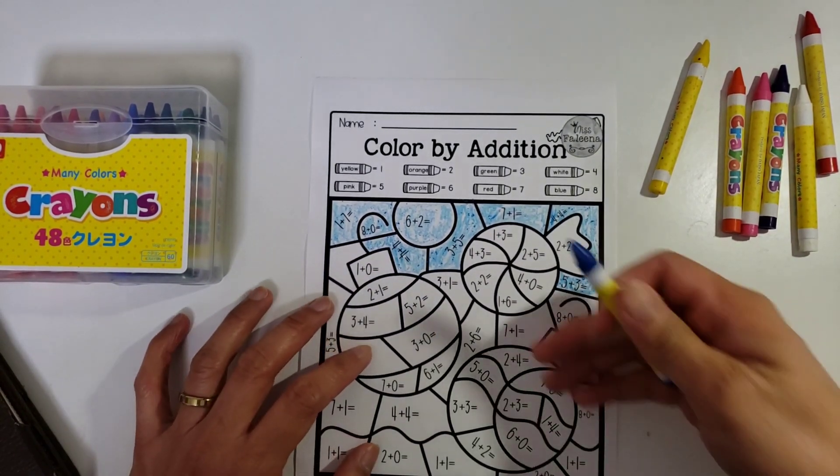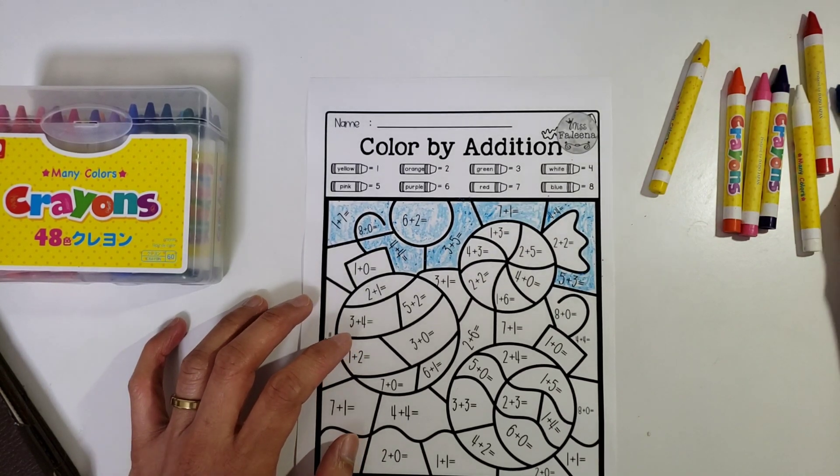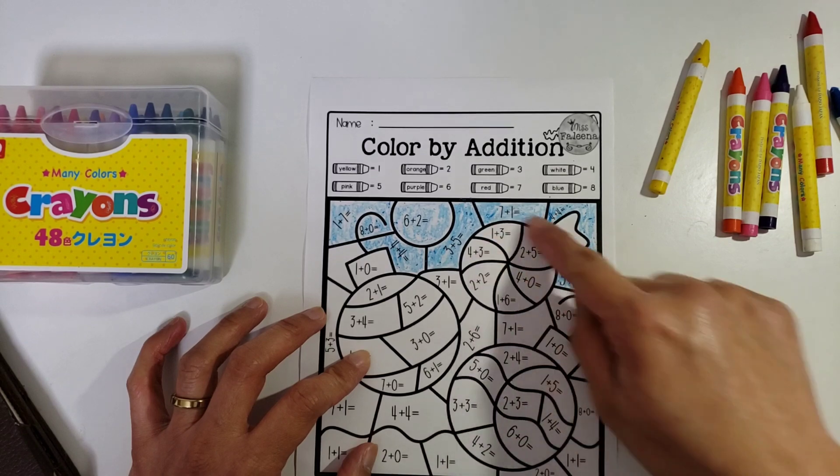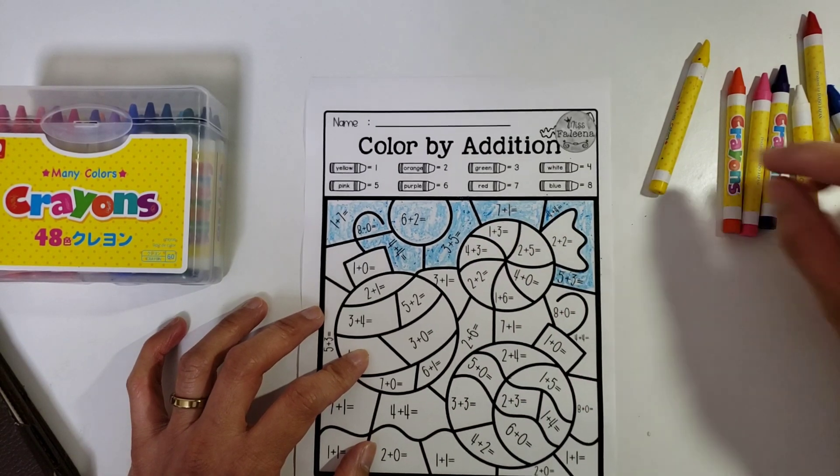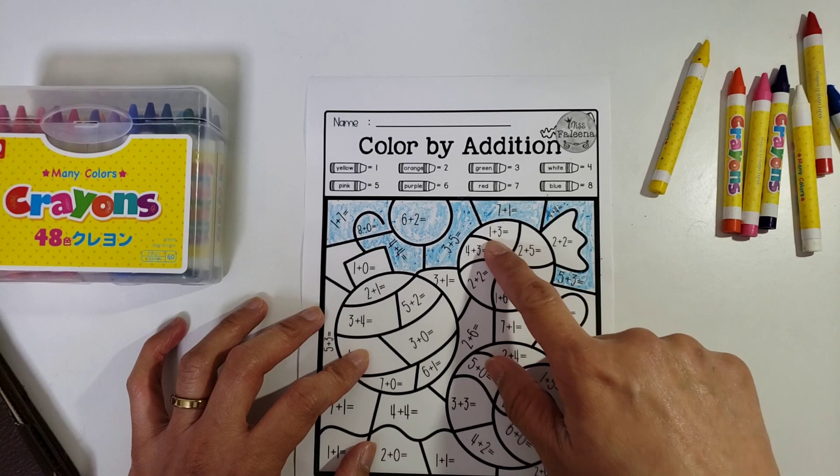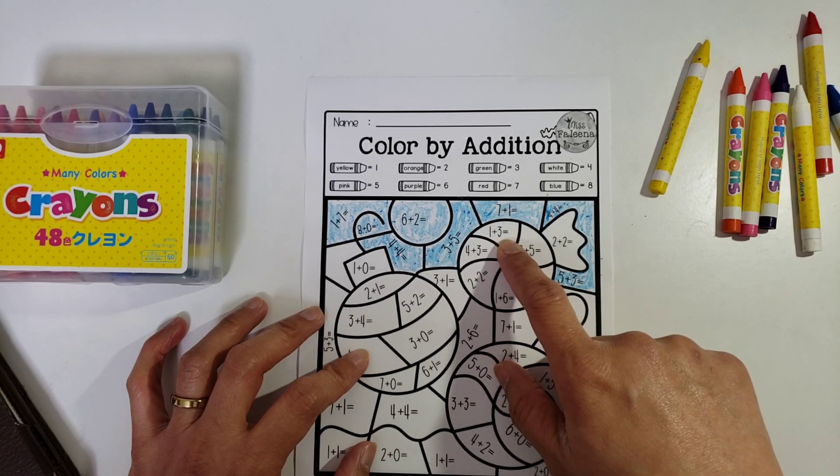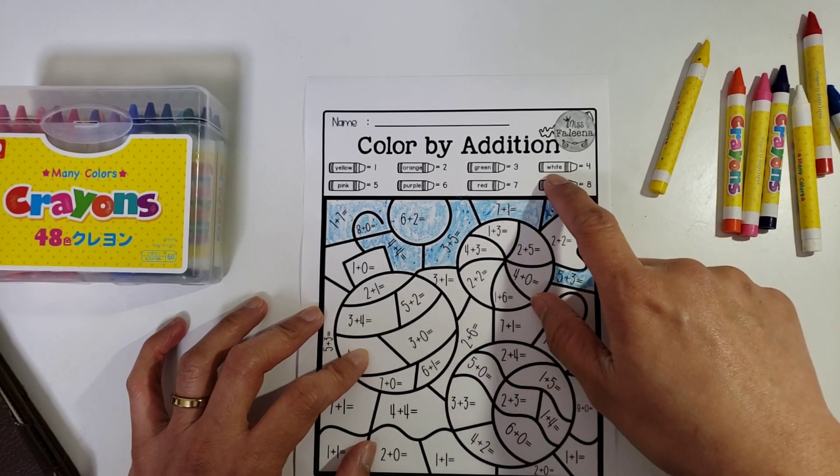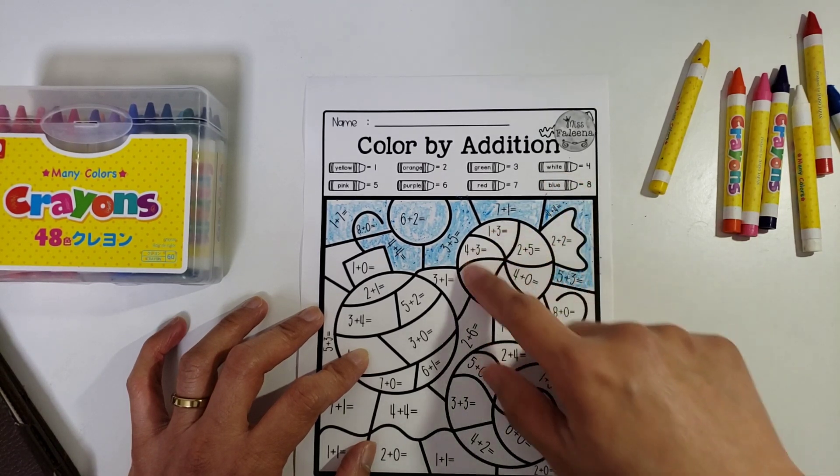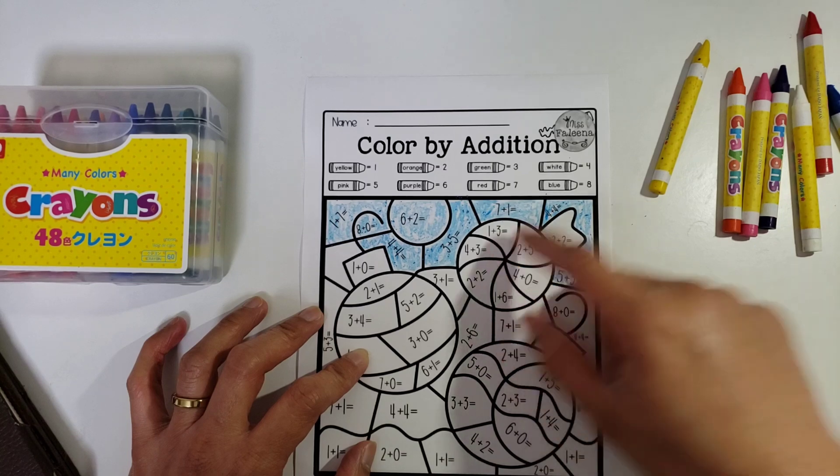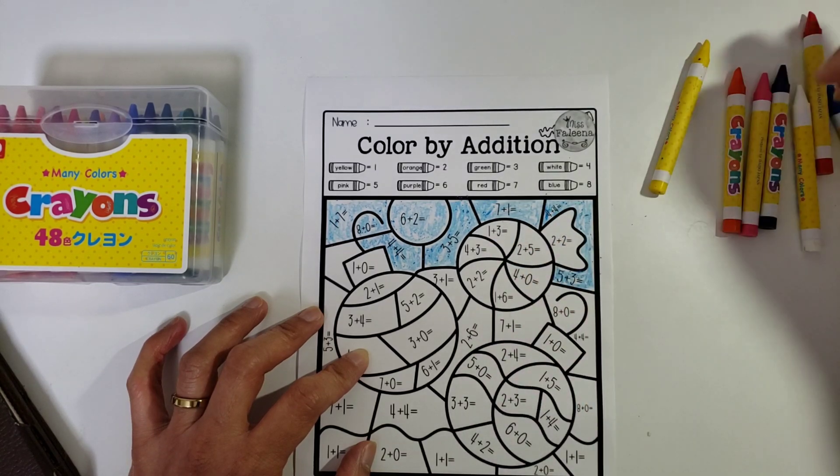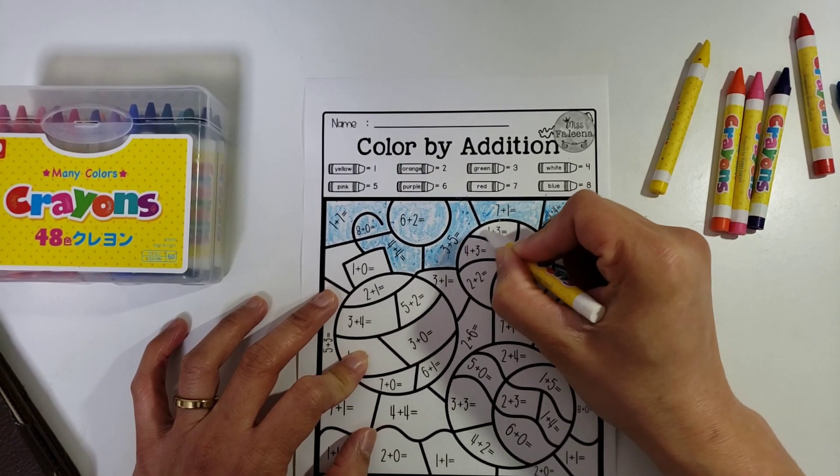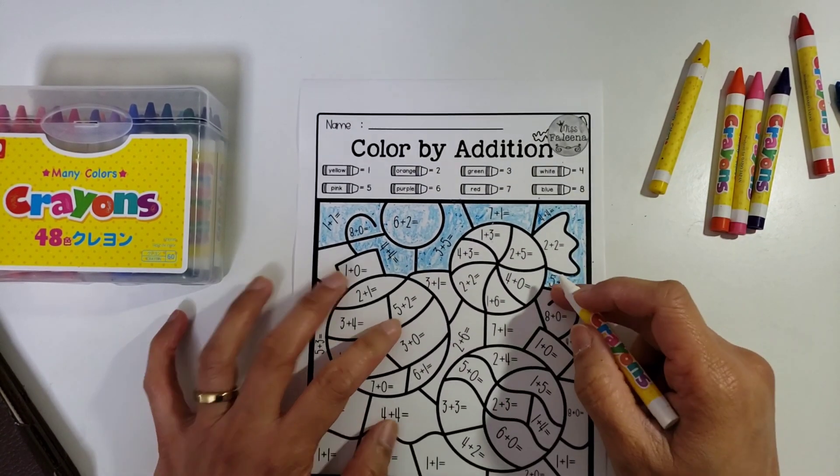So we're done with the eight number. And then the next one, we will start here in the circle. So that is three plus one, or one plus three, equals four. So the equivalent of this number is white. So all in here, let's color white.